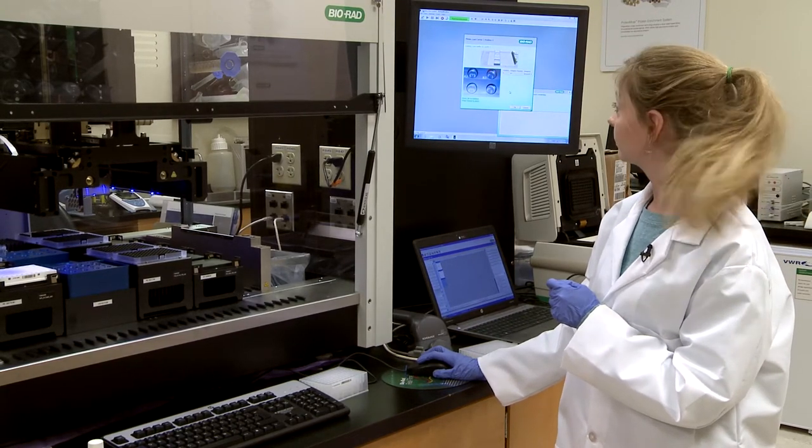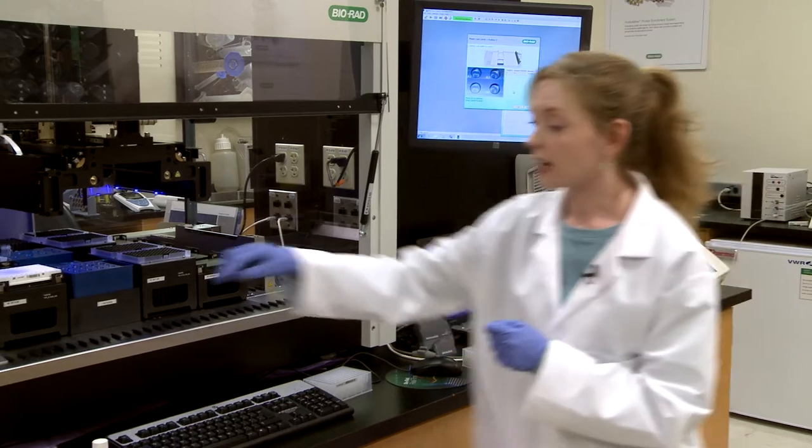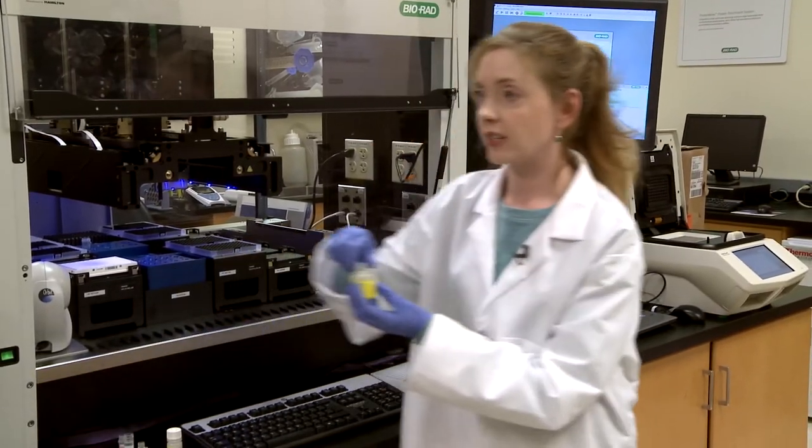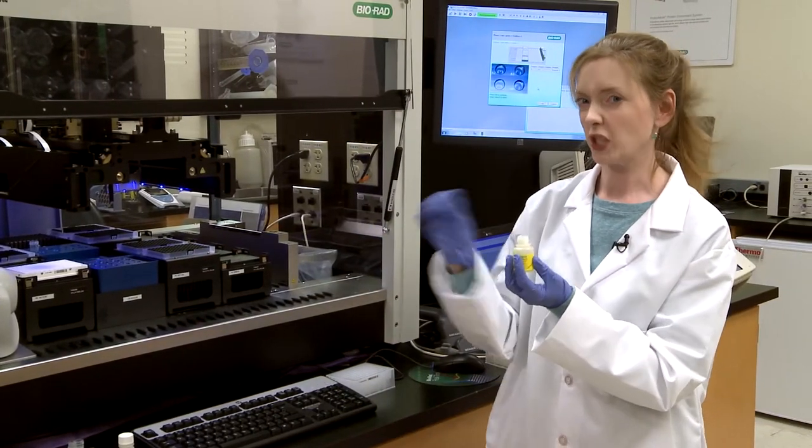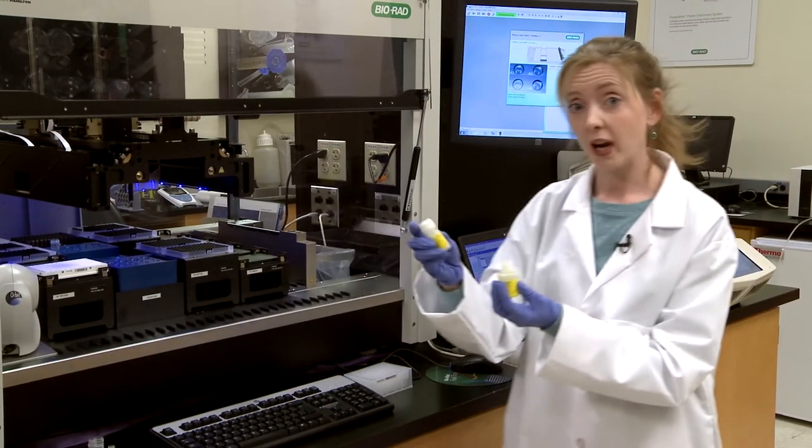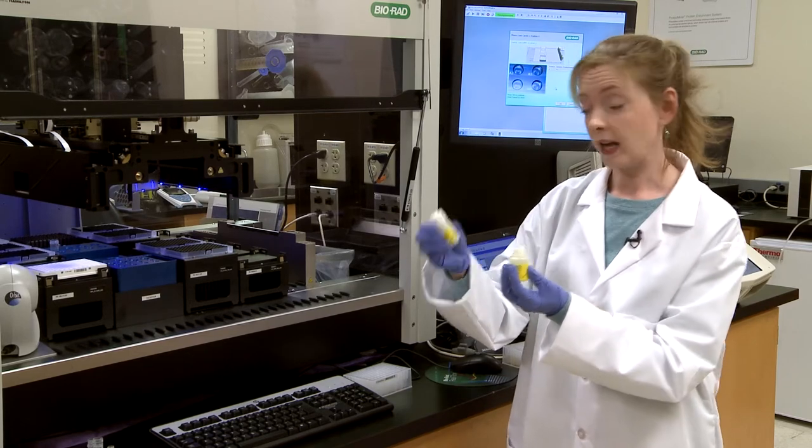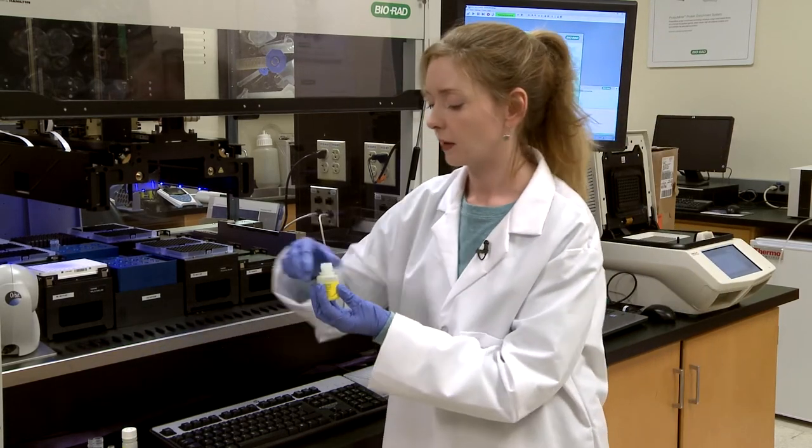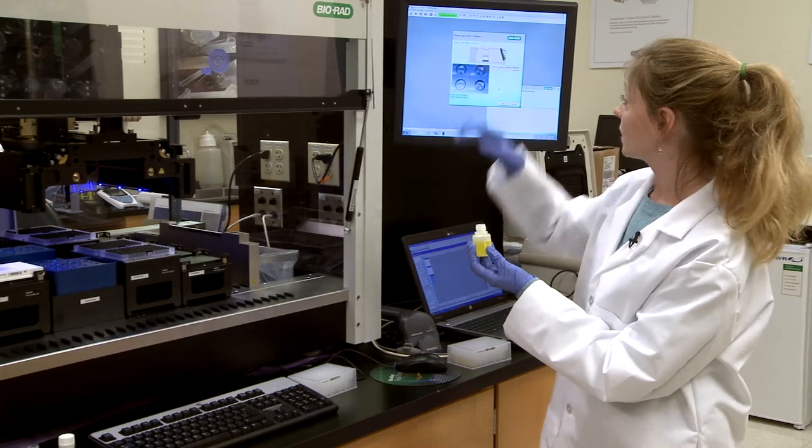Let's find out what's next. Next is the lysis reagent. You'll notice I've taken off all of the caps. You want to take those off before you put it in the instrument. That will be an expensive error, and also at this point if you have grinding beads you would add them right now but we're not using them for this. So that goes into position A1.